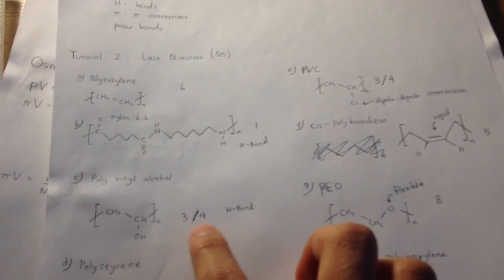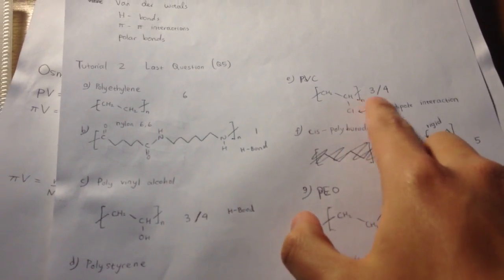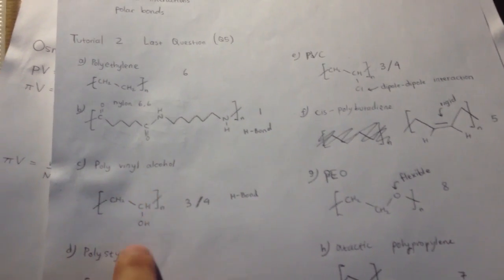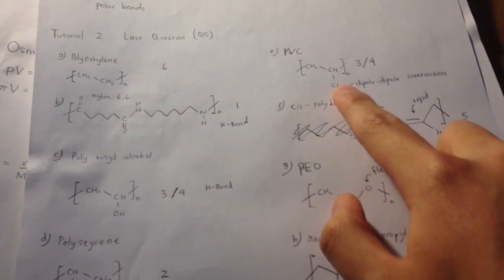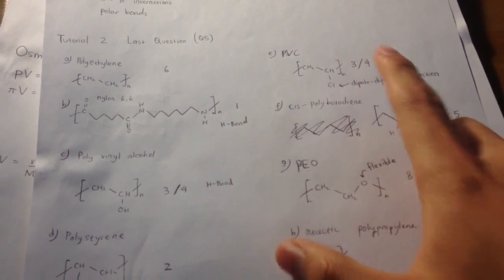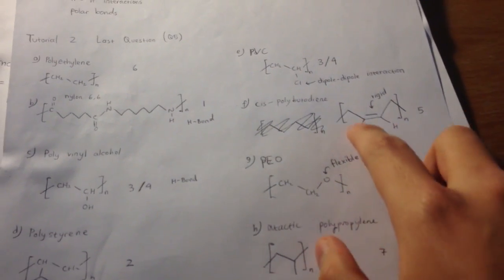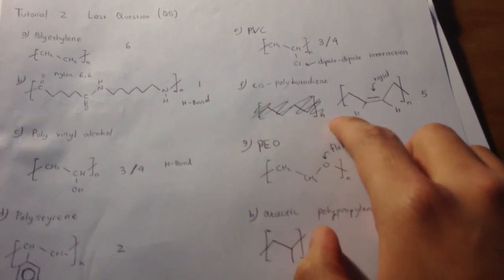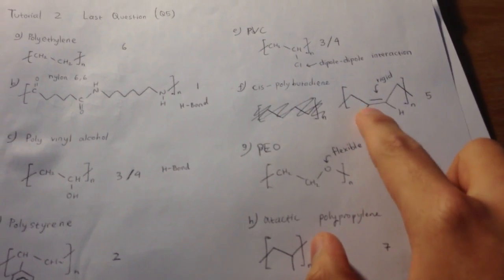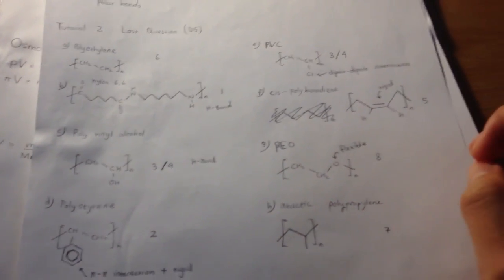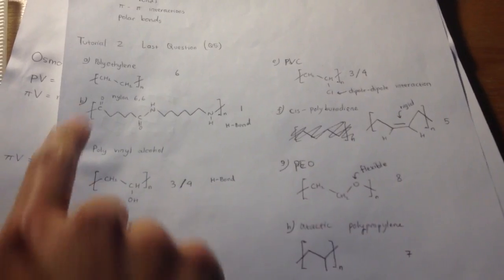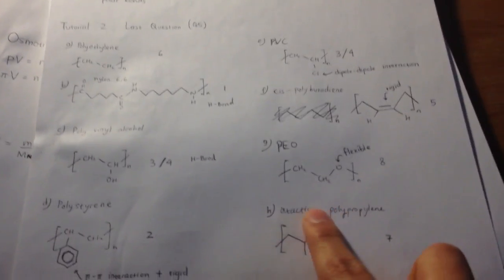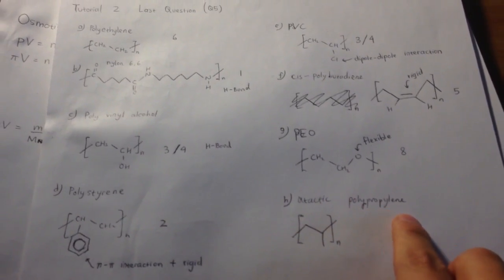The third and fourth would be polyvinyl alcohol, hydrogen bond and dipole-dipole interaction. The fifth one would be polybutadiene because this double bond is rigid. The sixth will be polyethylene. Seven would be atactic polypropylene. I actually don't know why, but in the lecture slides it says like that.